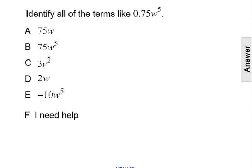Identify all of the terms like 0.75 W to the fifth. This question is asking for like terms. Like terms are terms that have the same exact variable or variables with the same exponent.